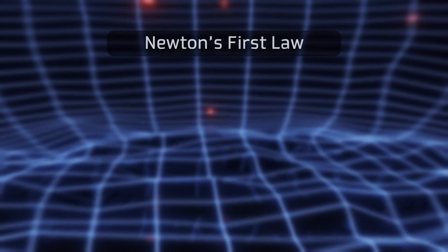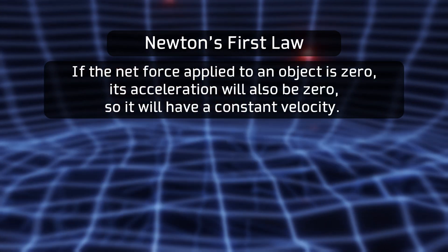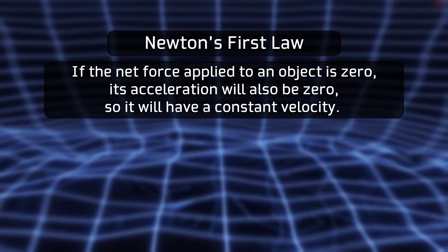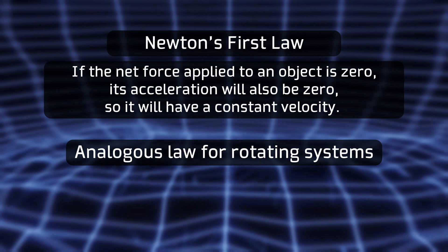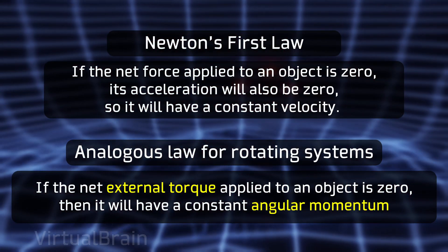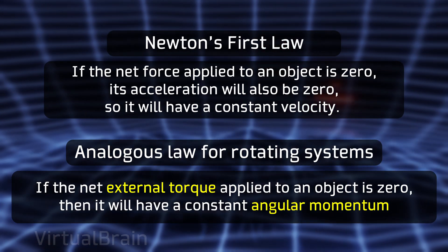Newton's first law tells us that when the net force applied on an object is equal to zero, its acceleration is also zero, and consequently its velocity will remain constant. Similarly, if we have a system which is capable of rotating on an axis, and the net external torque acting on it is zero, the total angular momentum of the system will also remain constant.